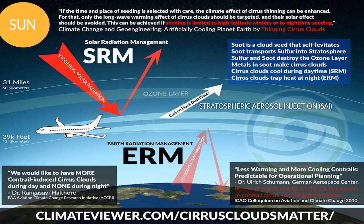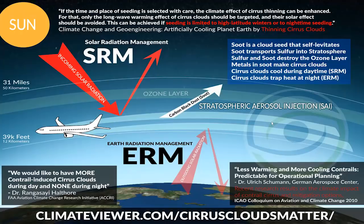You can look at every single leading proposal for geoengineering solar radiation management, and they all involve stratospheric sulfur injection or stratospheric metal injection — metals like aluminum, titanium, even calcium. Calcium is a huge one coming out of jet engines. All of these are contained within soot. Soot is also known as black carbon or carbon black dust. Since 1958, when the Navy first started creating clouds using carbon black soot, soot has been the name of the game when it comes to cloud formation.